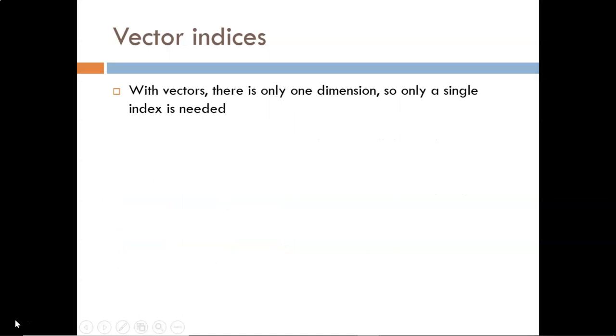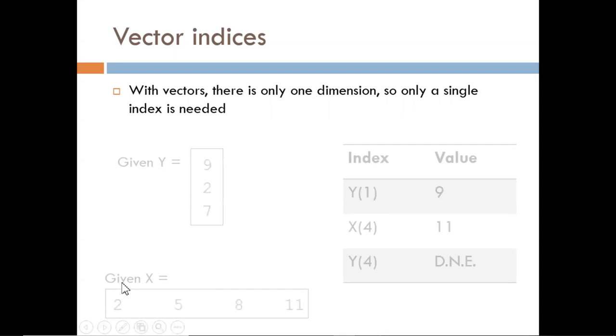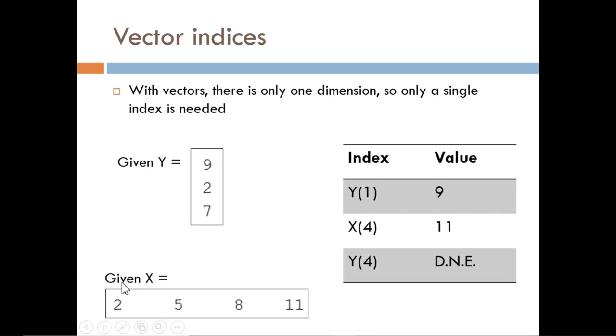Vectors are a little simpler. We only have one dimension, so we only need one index. It does not matter if we are dealing with a row or a column vector. Looking at these examples, it is clear that the first index in Y holds a 9. Also, the fourth index in X holds an 11.